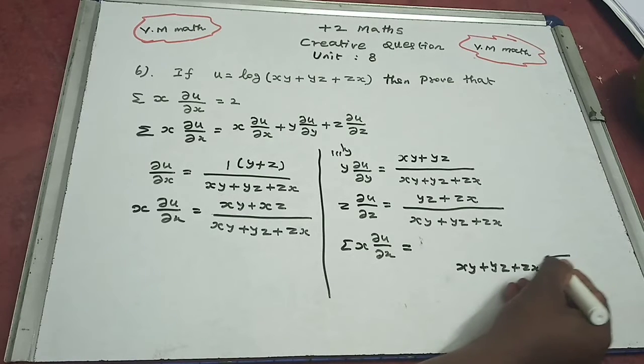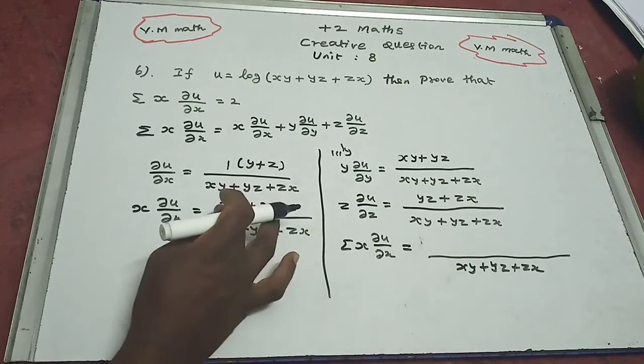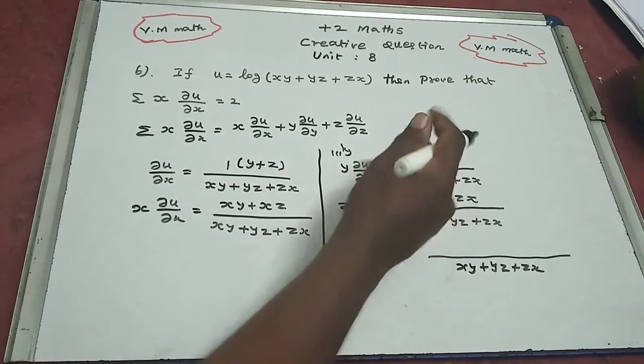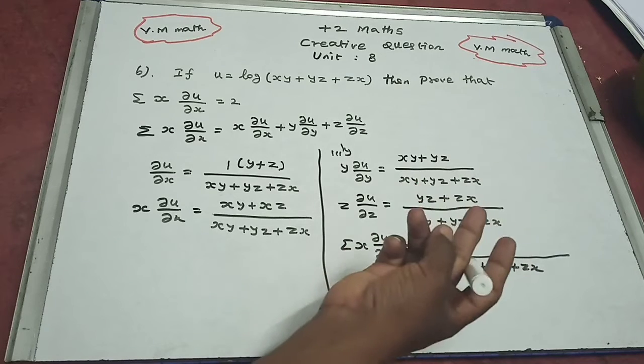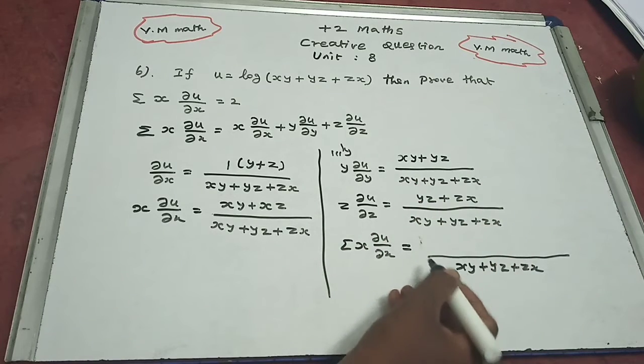Now the numerator: xy plus yz plus yz plus zx plus zx plus xy. Here is xy and here is xy, so 2xy. Here is yz and here is yz, so 2yz. Then zx appears twice, so 2zx.